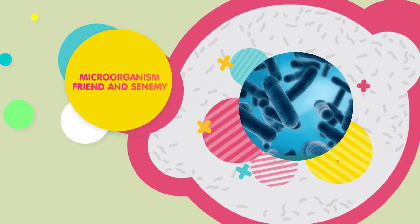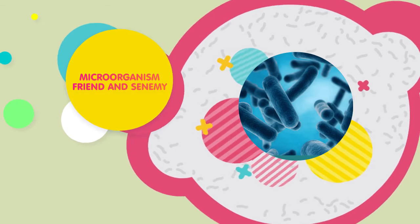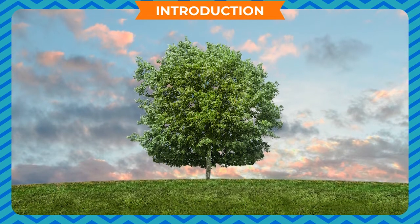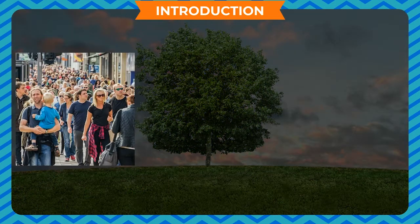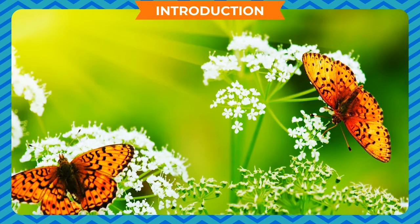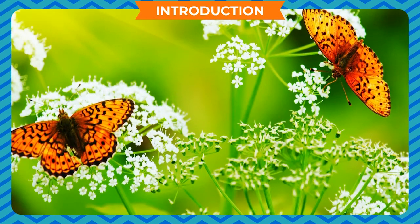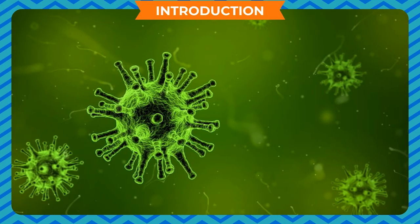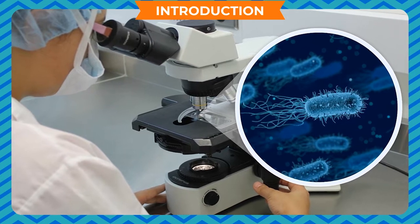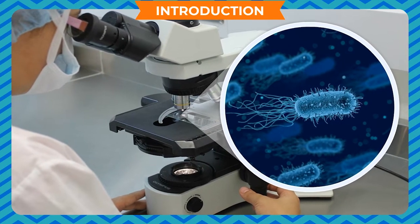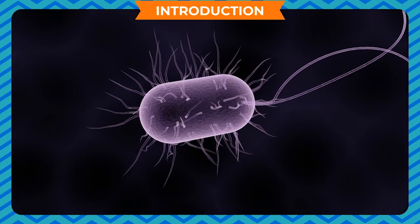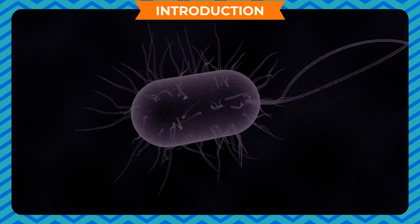Our environment is made of living and non-living things. Living things include human beings, animals, plants, and other small living organisms. Some of the small living organisms are visible, but some are not. Those organisms which are not visible to the naked eye but can only be viewed under a microscope are called microorganisms, and the study of these microorganisms is called microbiology.